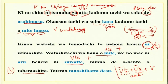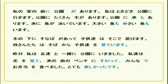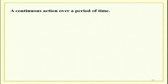Now before doing this te form, I will quickly revise the te-imasu form, which is the continuous form, which is what we just learnt, and then go on to doing this and something else as well. The te-imasu form expresses a continuous action over a period of time — generally 10, 15, 20 minutes, or maybe 30 minutes, or maybe an hour, but not longer than that. Basically, an action over a short period of time.